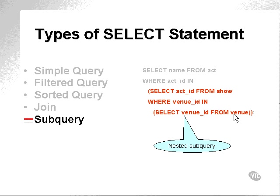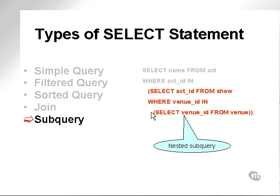Here is an example of a nested subquery, actually in the WHERE filtering clause, where the main SELECT statement selects from the ACT table. The ACT ID from the ACT table is found within the ACT ID from the SHOW table, where the VENUE ID within the SHOW table is found within the VENUE table. So the VENUE table selection is included within the SHOW table selection, which is included within the ACT table selection.